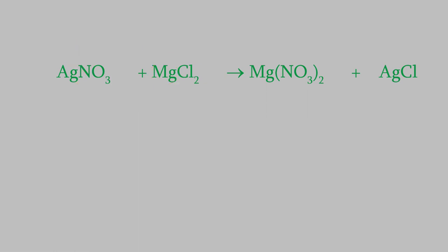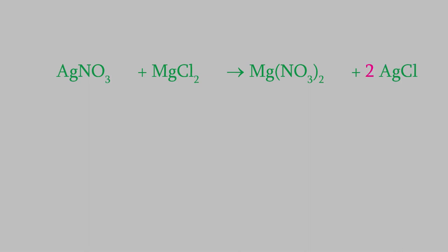Finally, we need to balance this reaction. A good rule of thumb is that it's usually easiest to start by balancing the elements that aren't in a polyatomic ion, so we won't do nitrogen or oxygen yet. That leaves silver, magnesium, and chlorine. The silver and magnesium are already balanced — there's one of both on each side — so we'll balance the chlorine. There are two chlorines on the left and one on the right, so we need a coefficient of two on the silver-1 chloride. Now the chlorines are balanced, but that messed up the silver: there are now two silvers on the right but just one on the left, so we need a two in front of the silver-1 nitrate. And now this reaction is balanced.